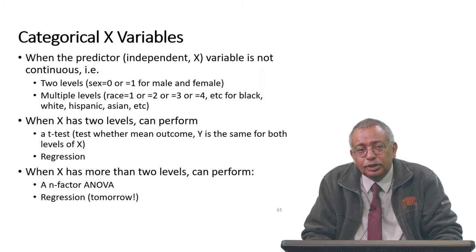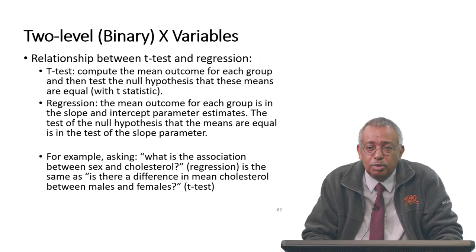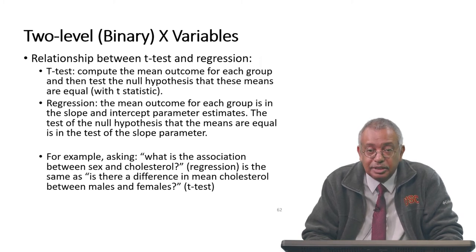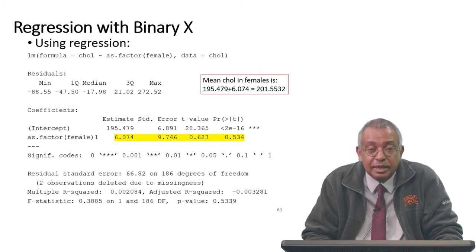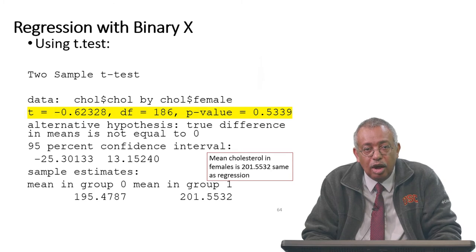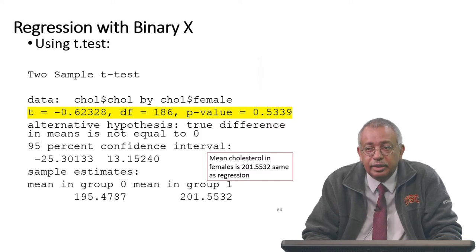Other issues to pay attention to include dealing with categorical X variables or predictors — for instance, if you're dealing with two-level or binary X variables and what the nuances are. This relates to conducting two-sample tests and how it connects to when the predictor is binary. These are topics you can read through in the slides and familiarize yourself with, as they are of fundamental importance when doing modeling.